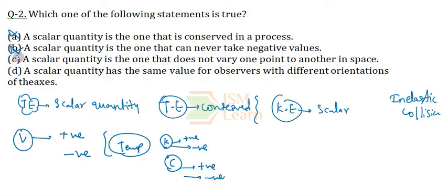Now, coming to option C, option C says that the scalar quantity is the one that does not vary from one point to another point in space. Let us take this. So, let us take the same example as before, potential.